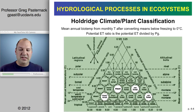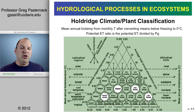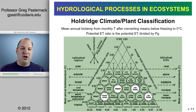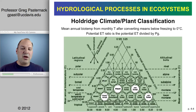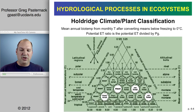A desert is a good example. This axis shows a ratio — potential ET divided by gross precipitation. A value of 1 means you have exactly as much potential ET as precipitation. Anything more represents relatively dry conditions because you can remove more water than is provided each year. That's why you see the word 'desert' particularly in the lower-left section.